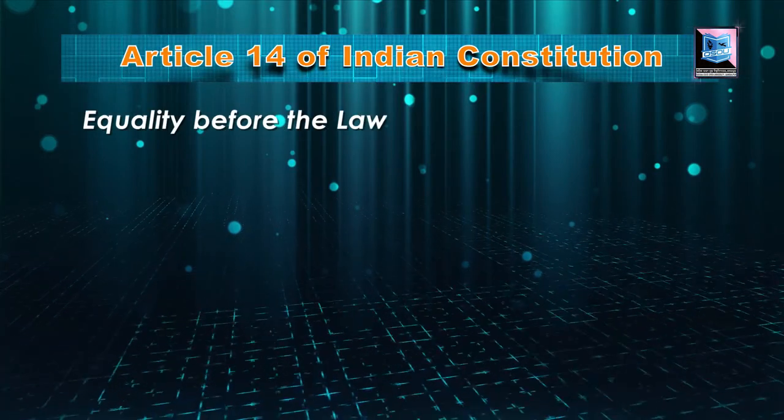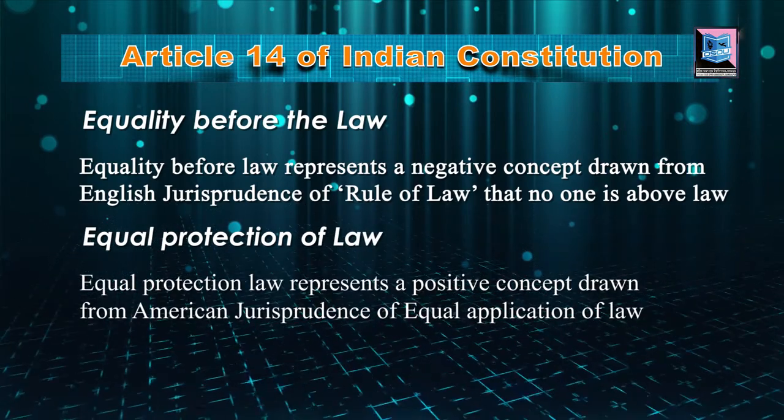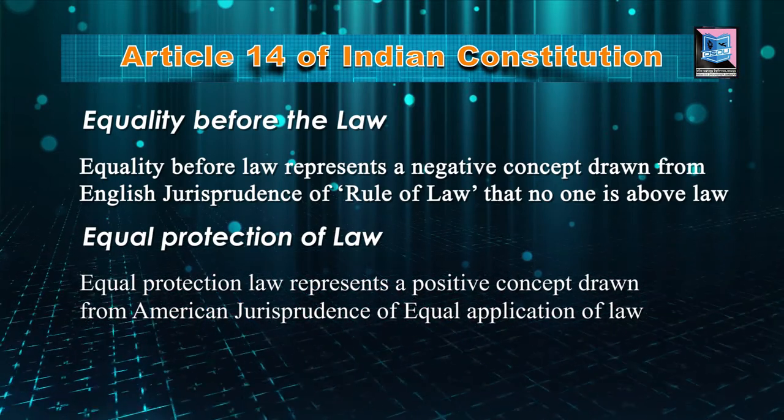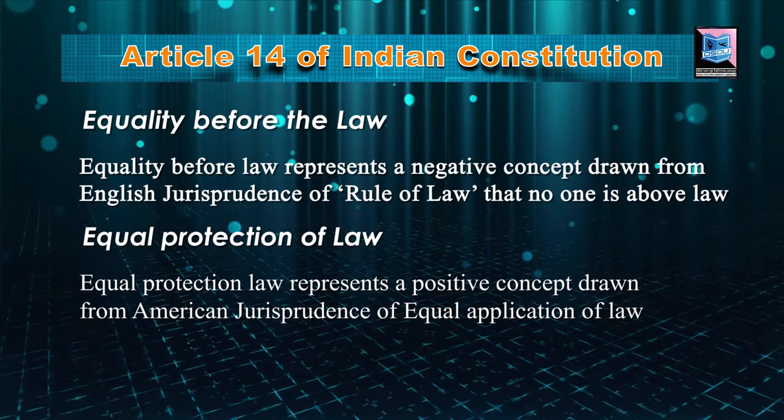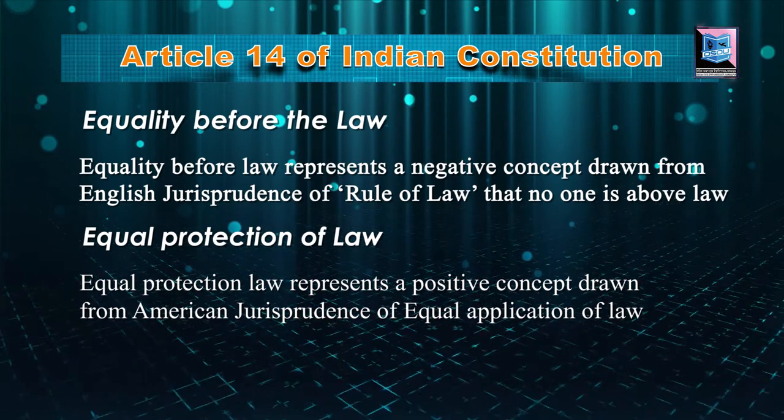If you read Articles 17 and 18, they talk about the idea of abolition of untouchability. Article 18 talks about there shall be no designation apart from academic or army designations, in order to ensure equality of status among citizens of India. Starting with Article 14 of the Indian Constitution — if you read the article, two terms are used: equality before law and equal protection of law. Equality before law means no one is above the law — a negative implication, that is, the rule of law. If there is rain happening outside, we all shall get drenched. No one shall be immune. No one is above the power of law. It's a negative implication taken from English jurisprudence.